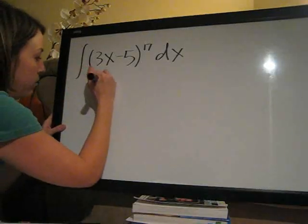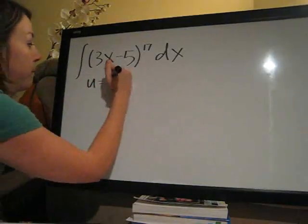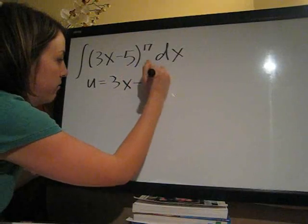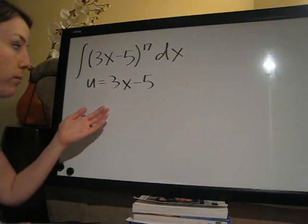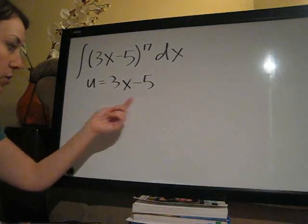They say that u is equal to 3x minus 5, this part right here. So they just ask us to evaluate when they give us what u is. We don't have to guess.